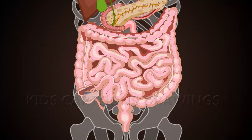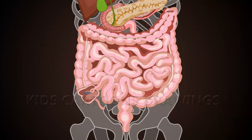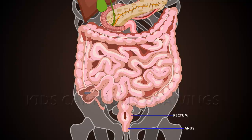The bolus is pushed into the ascending colon and hepatic flexure, then into the transverse colon, and travels through the splenic flexure. The bolus moves into the descending colon and then into the sigmoid colon, before finally moving into the rectum and anus. The anus contains the anal sphincter for defecation.